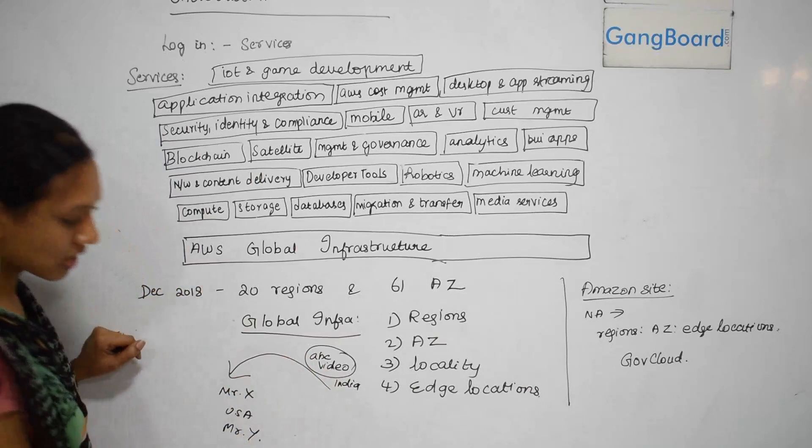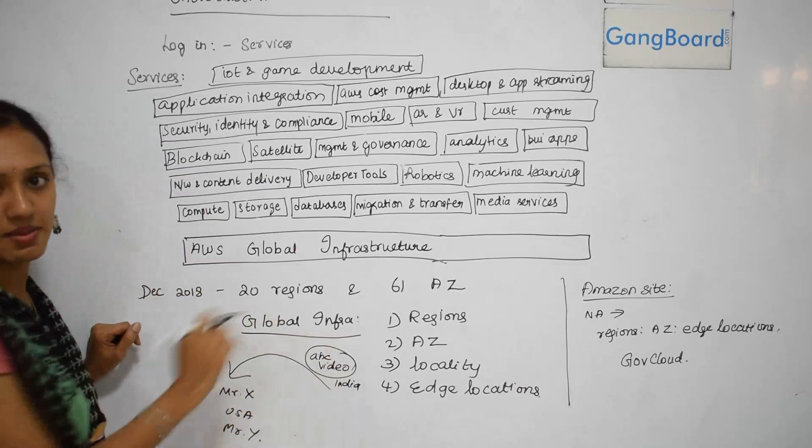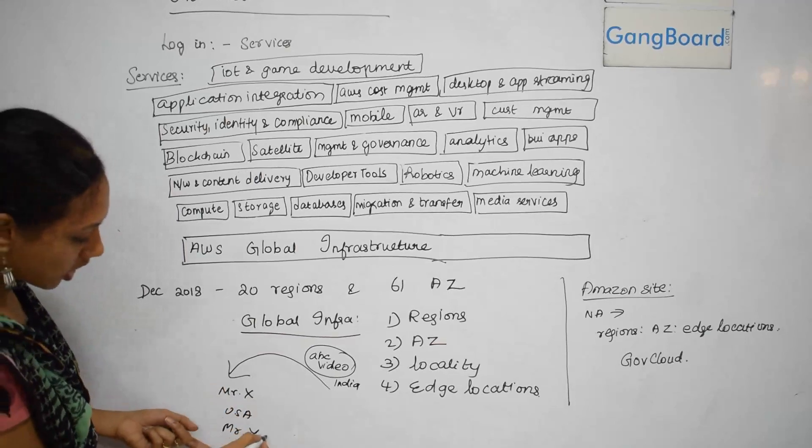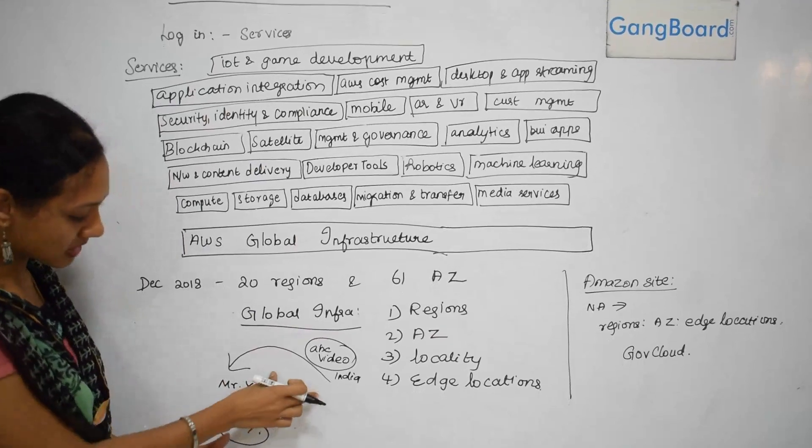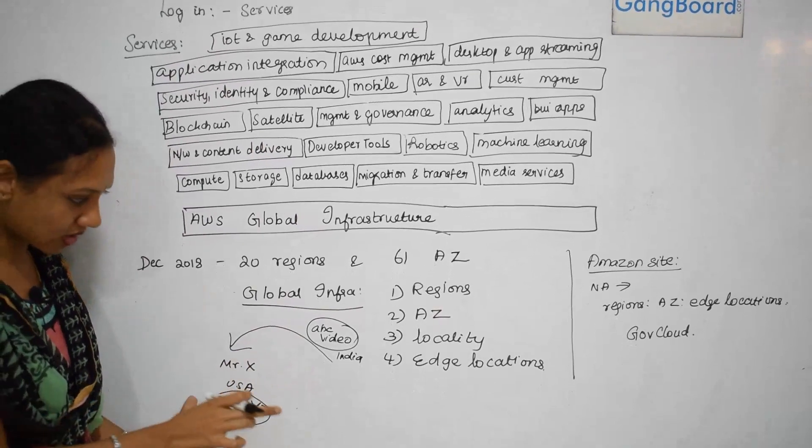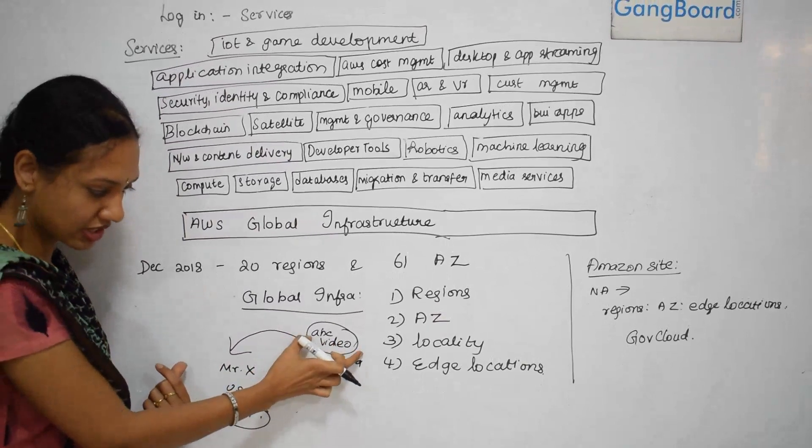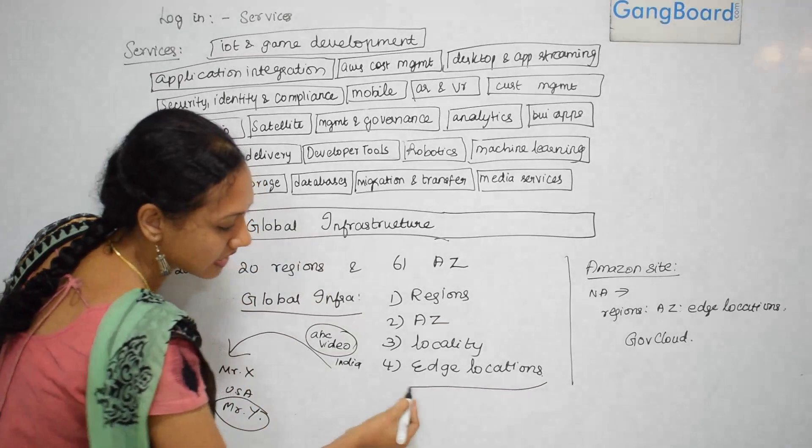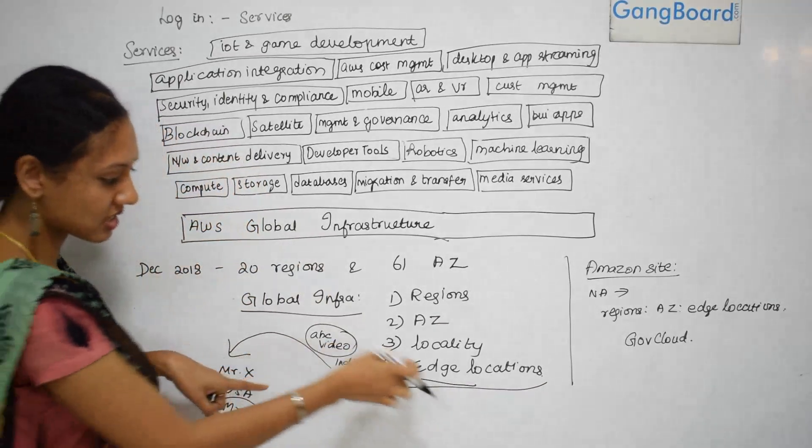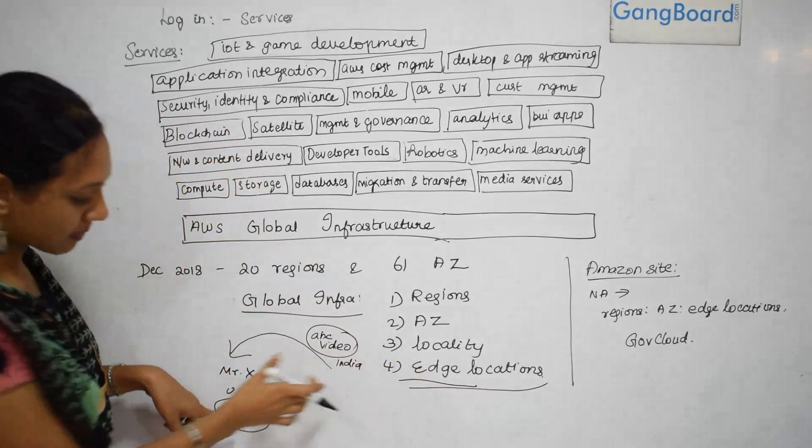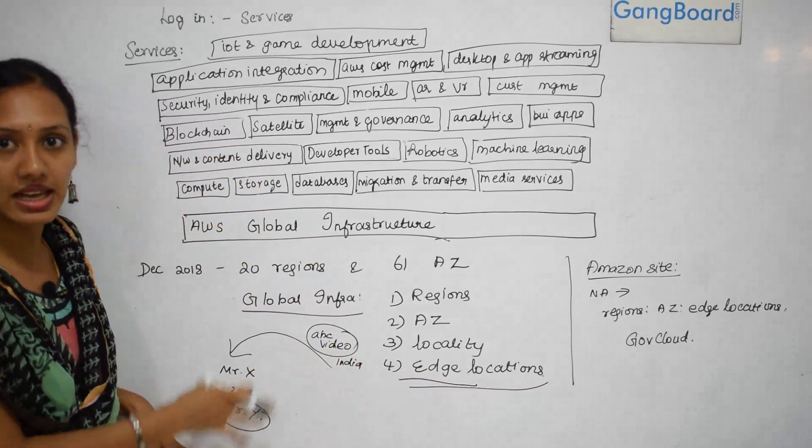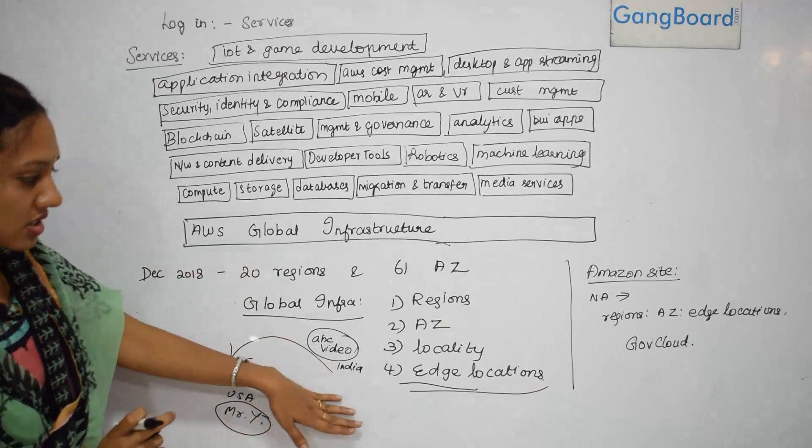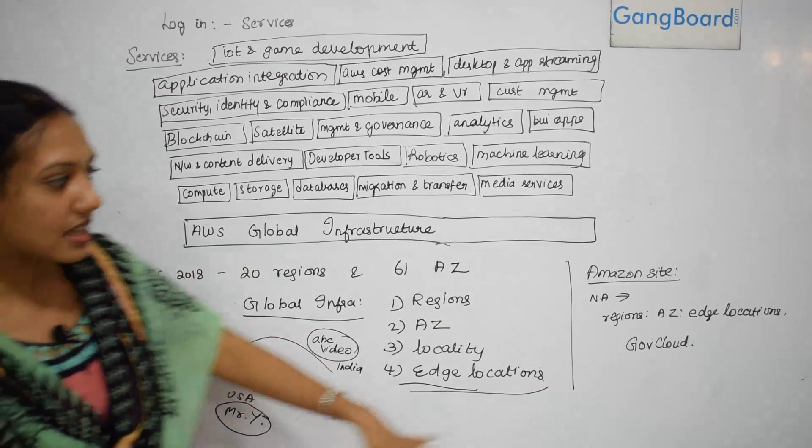So next time when, say, Mr. Y wants to access this same ABC video who also sits in the US, he will not be taking so much time as Mr. X. Why? Because this ABC video will be cached in a location that is called edge location. It will be cached in this edge location so that Mr. Y will not be having any latency to see this ABC video. So this is all about edge location.